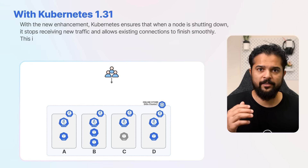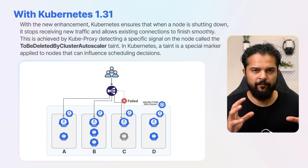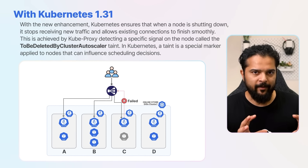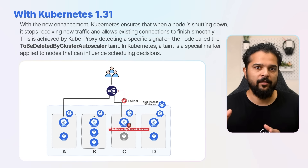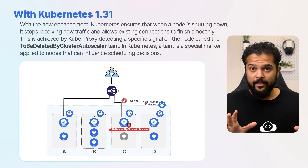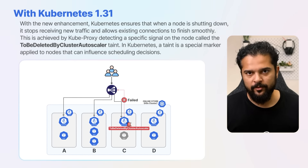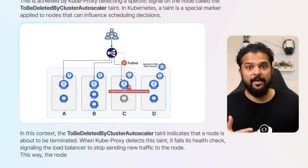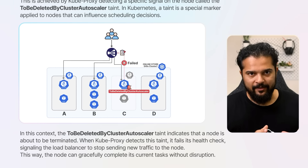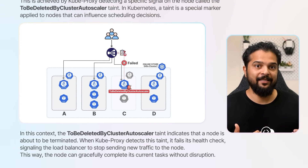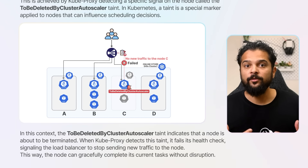With the new enhancement, Kubernetes ensures that when a node is shutting down, it stops receiving new traffic and allows existing connections to finish smoothly. This is achieved by Kube Proxy detecting a specific signal called the to-be-deleted-by-cluster-autoscaler taint on the node. In Kubernetes, a taint is a special marker applied to nodes that can influence scheduling decisions. This taint indicates that a node is about to be terminated. When Kube Proxy detects it, it fails its health check, signaling the load balancer to stop sending new traffic to the node, allowing it to gracefully complete its current tasks without disruption.